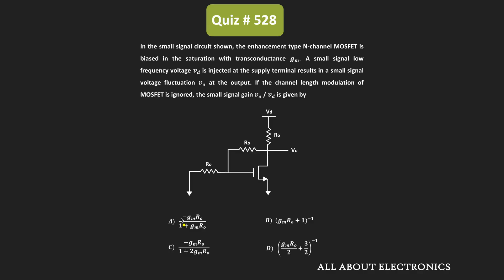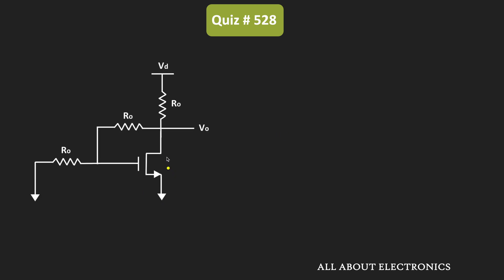Welcome to the YouTube channel all about electronics. In this question, we have been given the small signal circuit for the N-channel enhancement type MOSFET, biased in the saturation region, with transconductance equal to gm. A small signal voltage vd is applied, and we need to find the small signal gain vo divided by vd. The given circuit is already a small signal circuit, but let us simplify it by replacing the MOSFET with the small signal model.